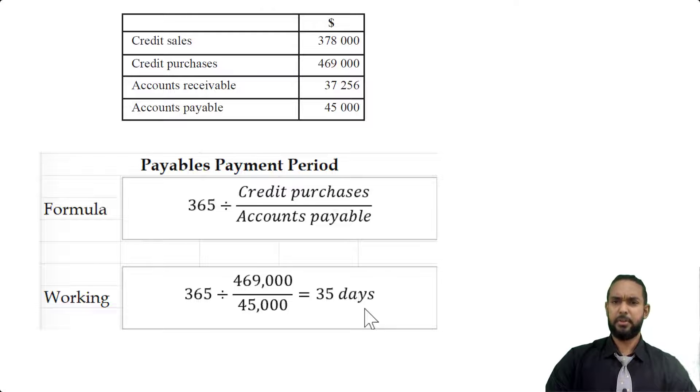Now, according to the information in the table here, credit purchases is 469 and accounts payable is 45,000. Plugging it into our working, we will get 35 days. So if we compare it to the receivables collection period, which is 36 days, we take almost the same time, we actually paying back our creditors a little faster than we're collecting money from our debtors. So that's a little risky, but I think relatively negligible. Now, if you want to check out my ratios playlist, I'm going to put a card up there and a link in the description below. So be sure to check it out if you want to learn a bit more about ratios for CSEC theory. Now, let's take a look at the next part in the question.